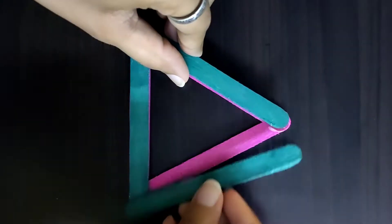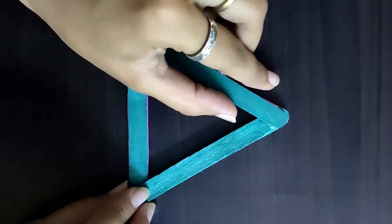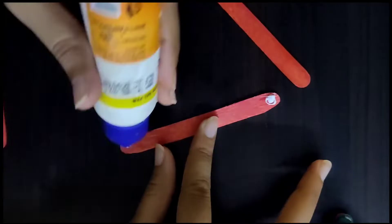Now again take three ice cream sticks of a different color and make a triangle like earlier we made.